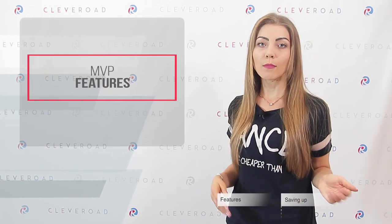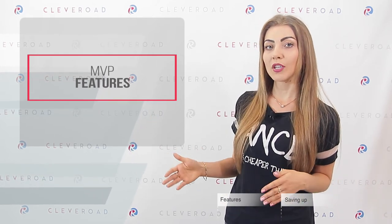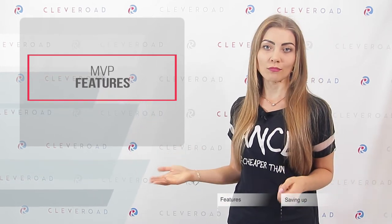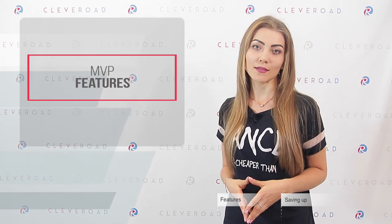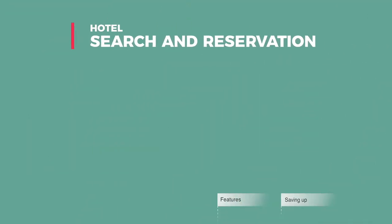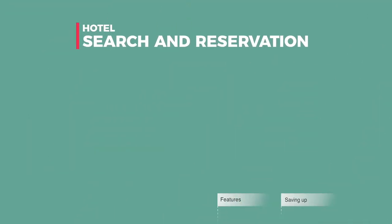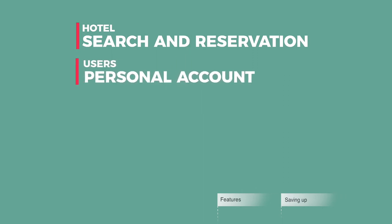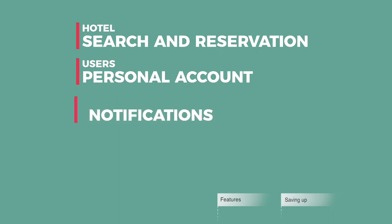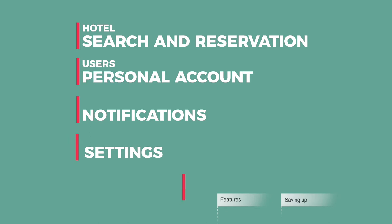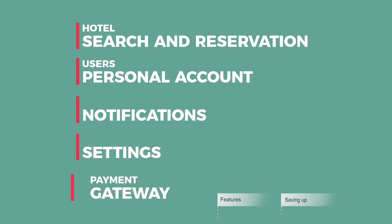Let's stick to the idea of the minimum viable product while making a hotel rooms reservation app. Why is it beneficial? You always need to consider that there are a lot of rivals in any industry, and nobody knows if an app will become popular. So your application should have a set of basic features to save time and money in case it won't catch on with users, while focusing on polishing the app's operation to perfection to get a positive user experience. The MVP features are: Number 1 — Hotel research and reservation. Number 2 — User's personal account. Number 3 — Notifications. Number 4 — Settings. And Number 5 — Payment gateway.